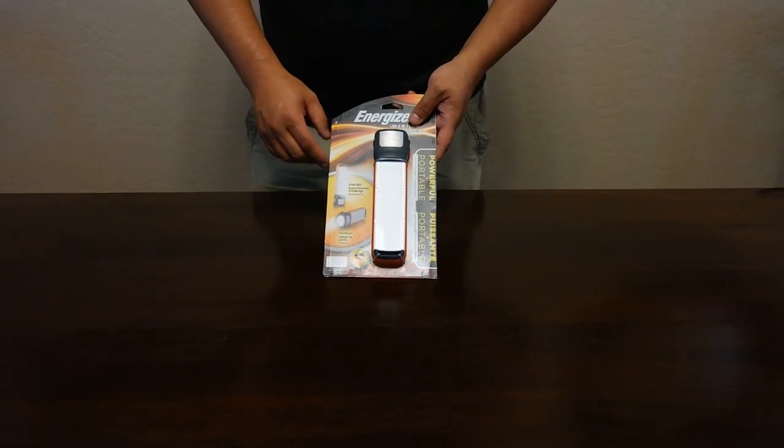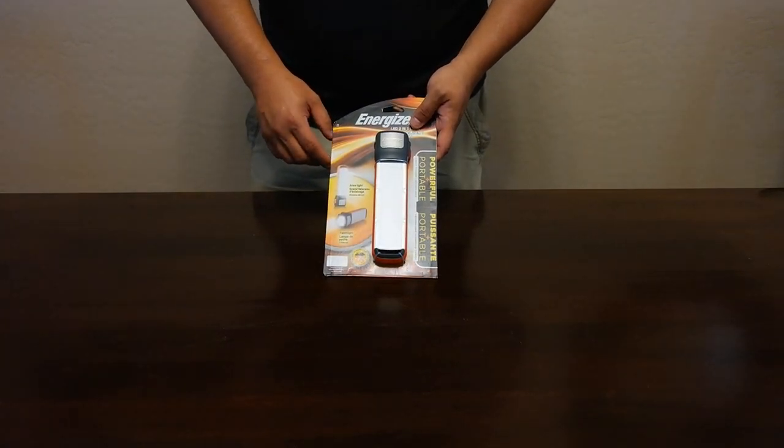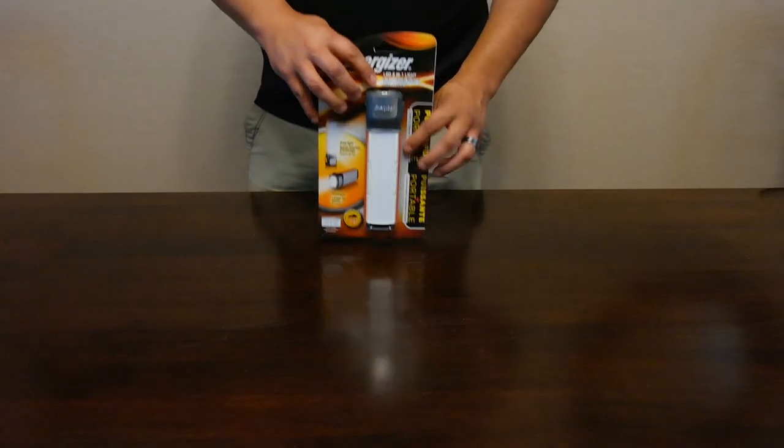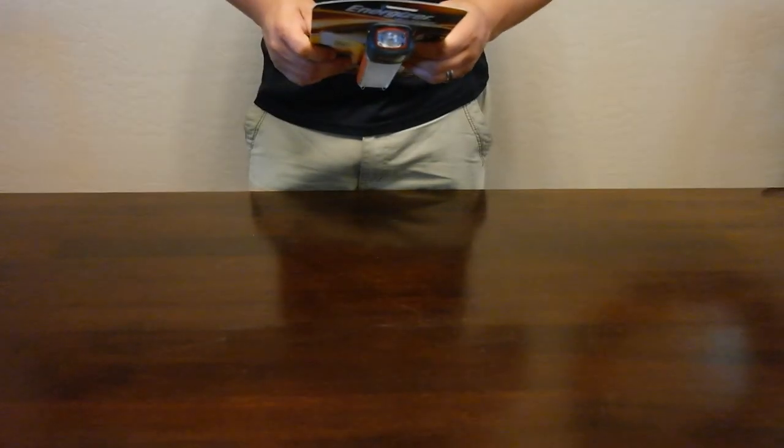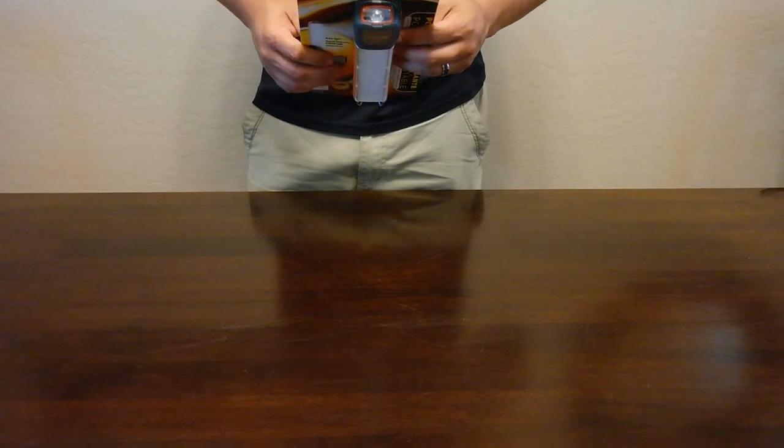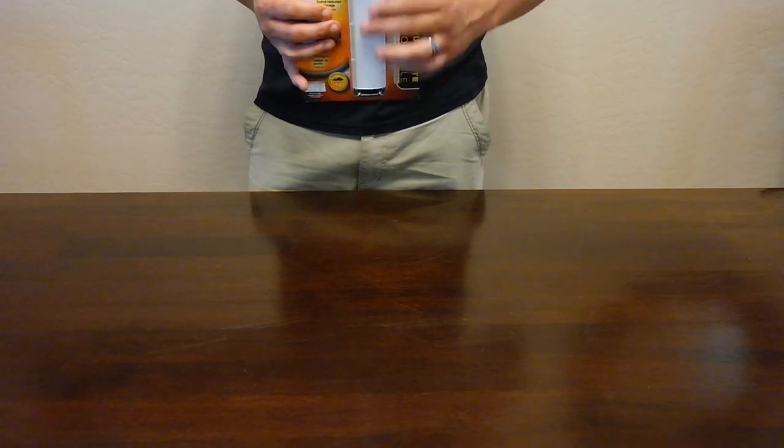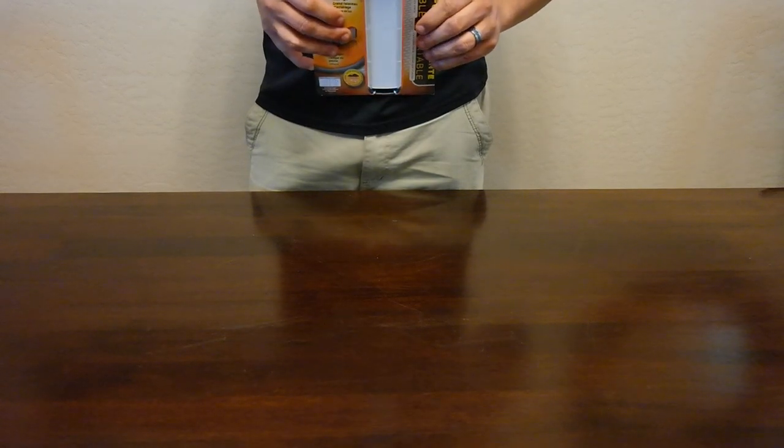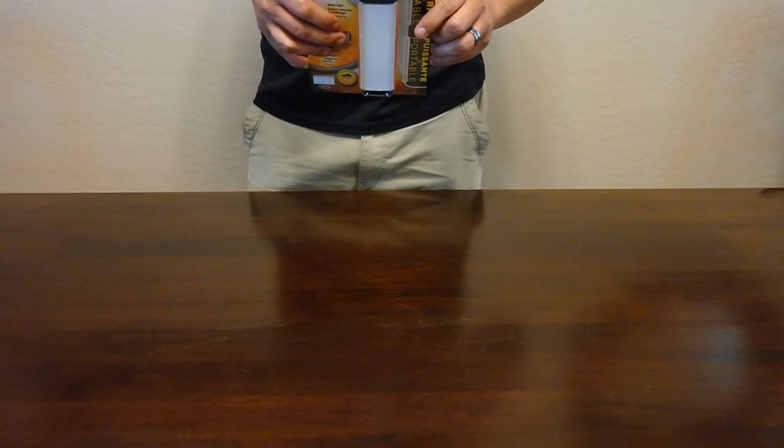It is 75 lumens for the directional and that lasts about 10 hours. The area light is 150 lumens and that's 100 hours. So quite a bit of difference.